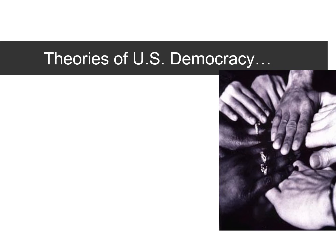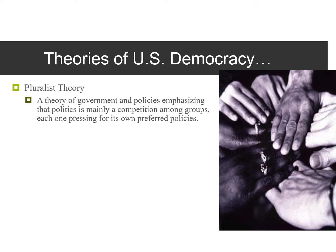Some theories of U.S. democracy: the pluralist theory, which is a theory of government and politics emphasizing that politics is mainly a competition among groups, each one pressing for its own preferred policies. We see this today with the Democratic Party and the Republican Party both pushing for their own preferred policies. These groups sometimes work together and the public interest should ultimately prevail.